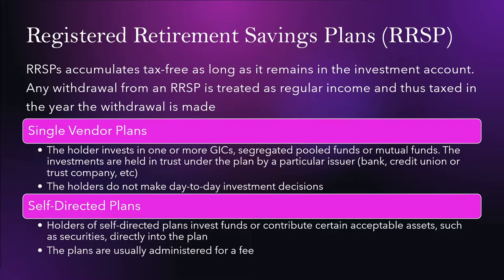You also have the RRSP, or registered retirement savings plan, as another method to defer taxes. RRSPs accumulate tax-free as long as the funds remain in the investment account. Any withdrawals from an RRSP are treated as regular income and will be taxed in the year the withdrawal is made. If your taxable income is $50,000 and you contribute $10,000 to an RRSP, you will get a tax slip and can deduct that from your taxable income, so you'll only pay taxes on $40,000.